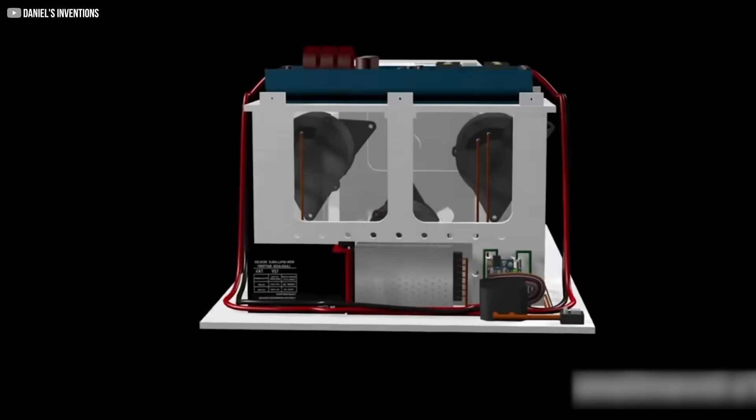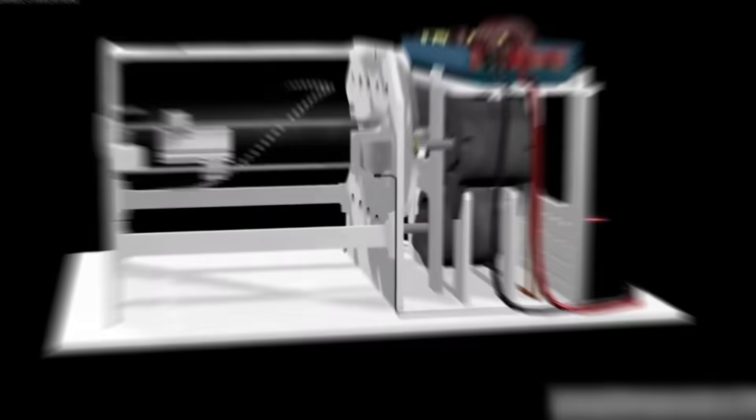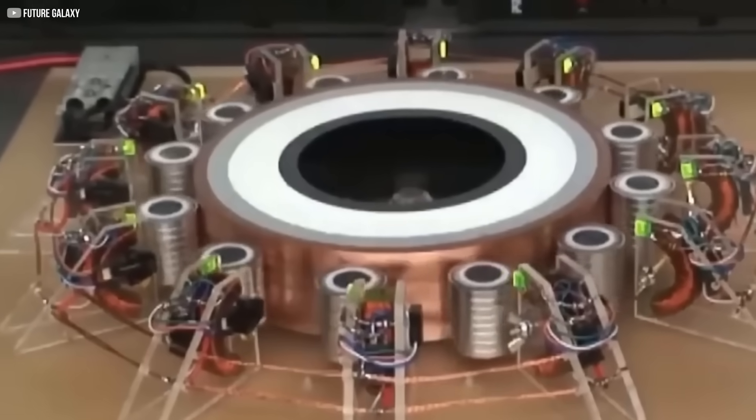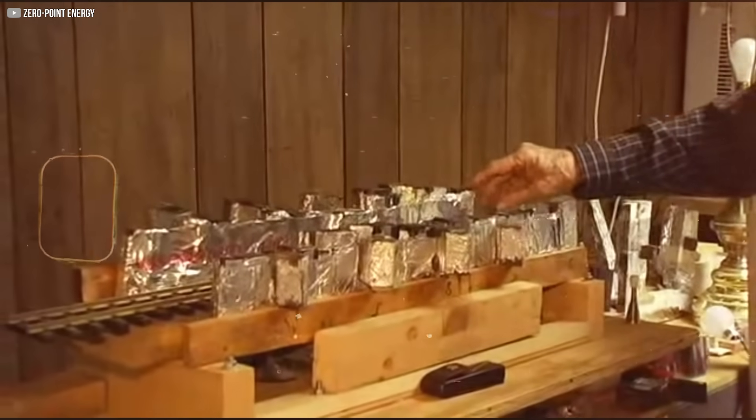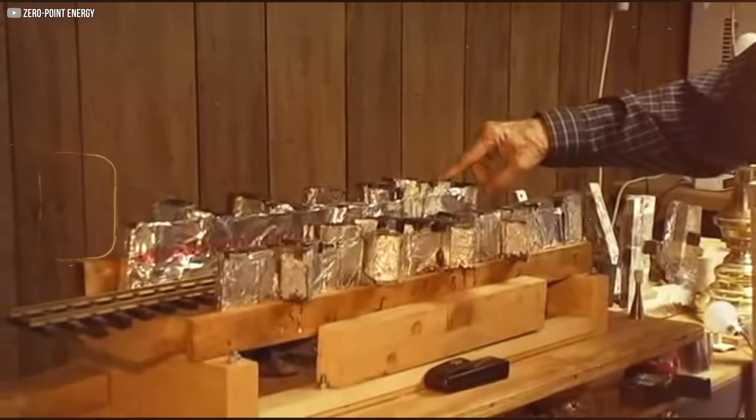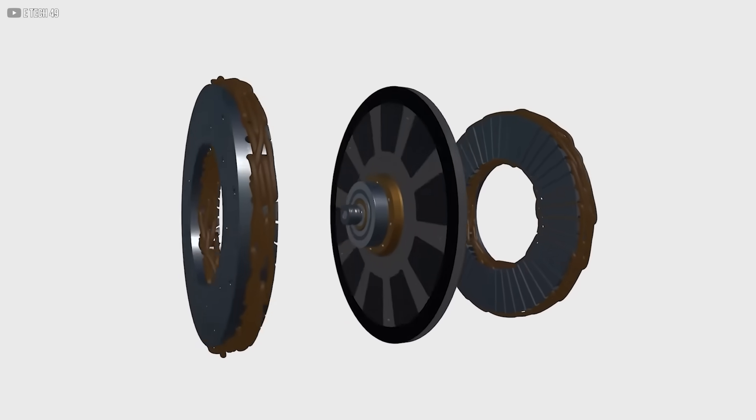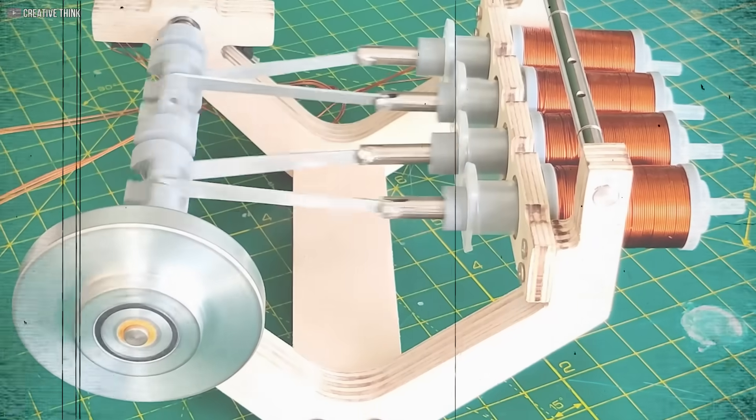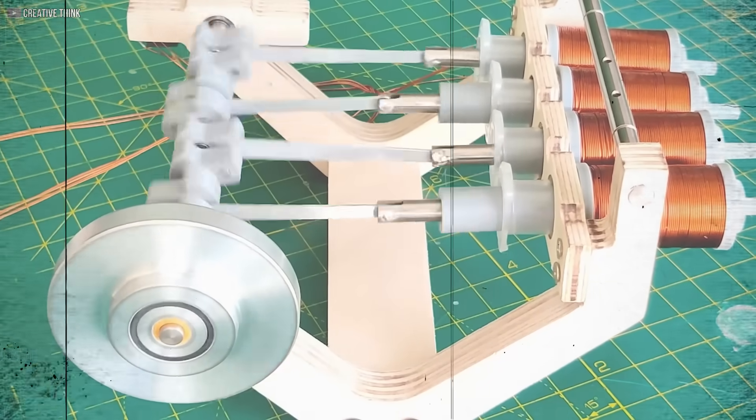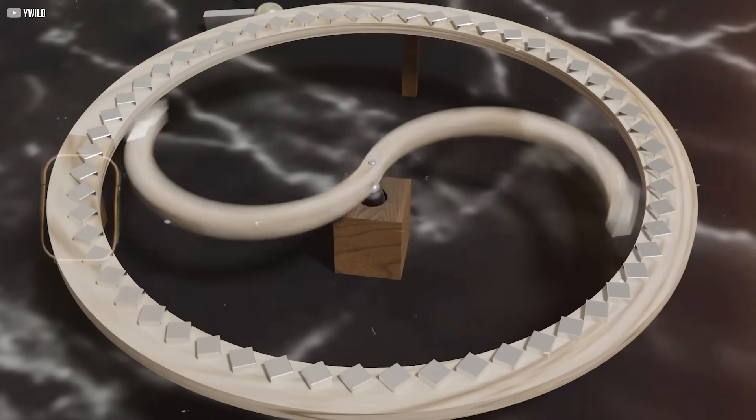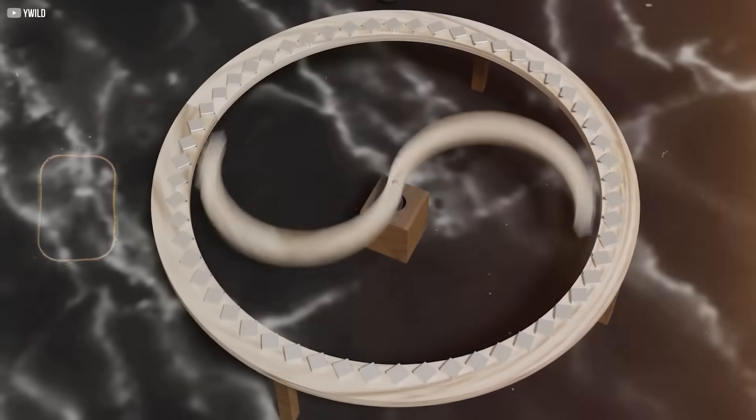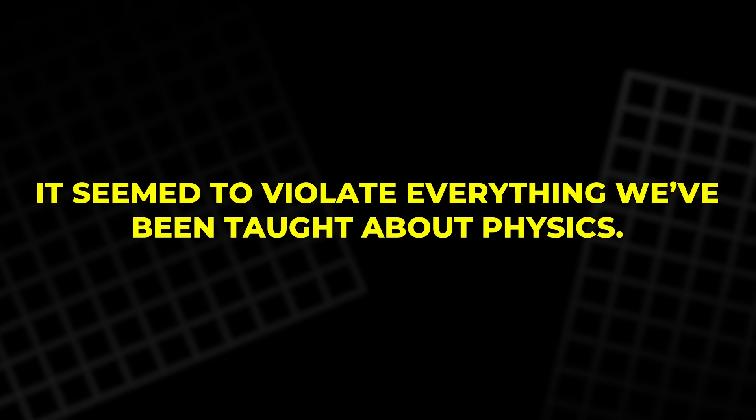Johnson's breakthrough came in the form of a magnetic rotor generator. A wheel, embedded with carefully arranged magnets, spun without stopping. No wires, no combustion, just fields interacting. He didn't just place magnets randomly. He calculated their exact positions and angles to create what he called magnetic imbalance - a push that never stopped pushing. Observers were stunned. The wheel would start with a gentle nudge, then maintain its speed without any sign of slowing. Some even claimed it gained speed. It seemed to violate everything we've been taught about physics.